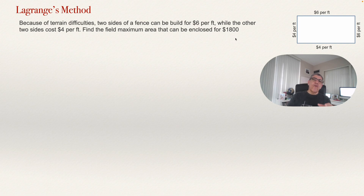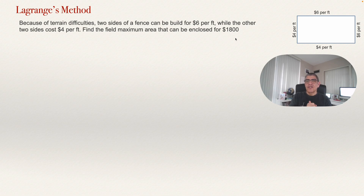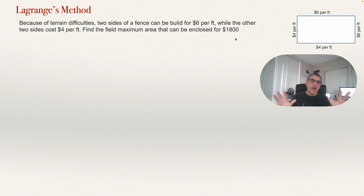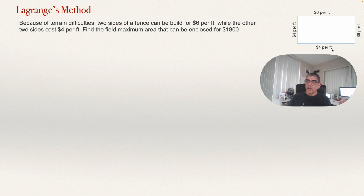We have a constraint: we need to enclose this area but we have only eighteen hundred dollars, so we cannot build whatever we want. Here is a picture of the terrain — this side is six dollars per foot, this is four dollars per foot, this is four dollars per foot, and this is six dollars per foot.